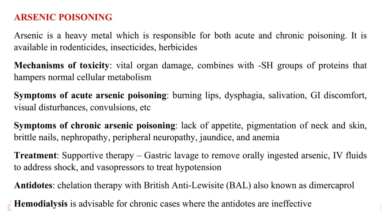Arsenic is a heavy metal responsible for both acute and chronic poisoning. Mechanisms of toxicity include vital organ damage combined with sulfhydryl groups, which hampers normal cellular metabolism. Symptoms of acute arsenic poisoning include burning lips, dysphagia, salivation, and GI discomfort. Chronic poisoning involves lack of appetite, pigmentation of neck and skin, brittle nails, nephropathy, neuropathy, jaundice, and anemia. Supportive therapy includes gastric lavage to remove orally ingested arsenic, IV fluids for shock, and vasopressors to treat hypotension. Antidotes include chelation with British antilewisite (dimercaprol), and hemodialysis is advisable for chronic cases where antidotes are ineffective. This concludes unit 5 toxicology principles — kindly subscribe to the Pharma Topics channel and access the toxicology playlist.